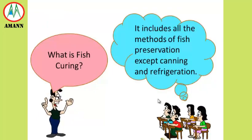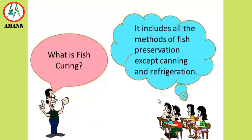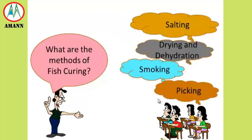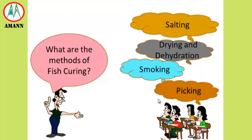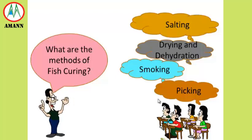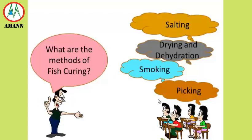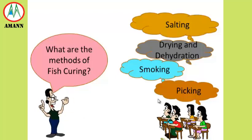Fish curing includes all the methods of fish preservation except canning and refrigeration. The methods of fish curing include salting, drying and dehydration, smoking, and pickling.